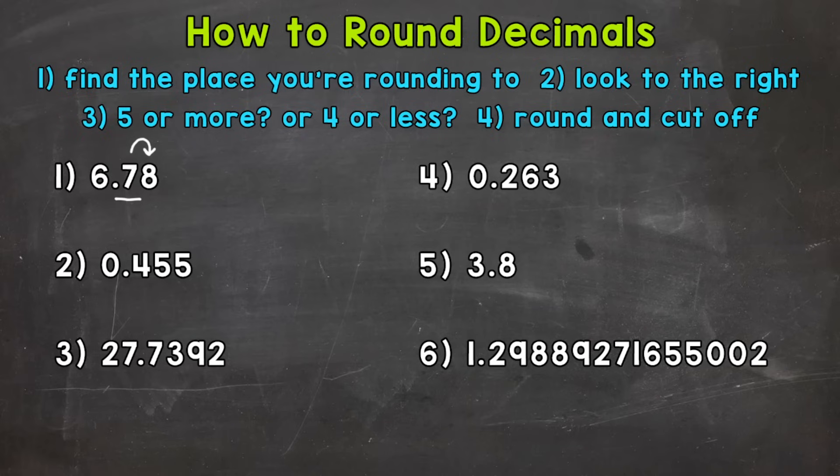Now that digit to the right is very important. It determines if we round up or stay the same. Essentially what we're doing, we're seeing is this closer to 6 and 7 tenths or is it closer to 6 and 8 tenths? So 5 or more, we round up. 4 or less, we stay the same. Well, 8 is more than 5. So we are going to round up. I'm going to draw something that looks like an equal sign, but it's with curved lines. That means we're finding an approximate or rounded value. So again, we're rounding up. So we are rounding to 6 and 8 tenths. That's our final rounded answer.